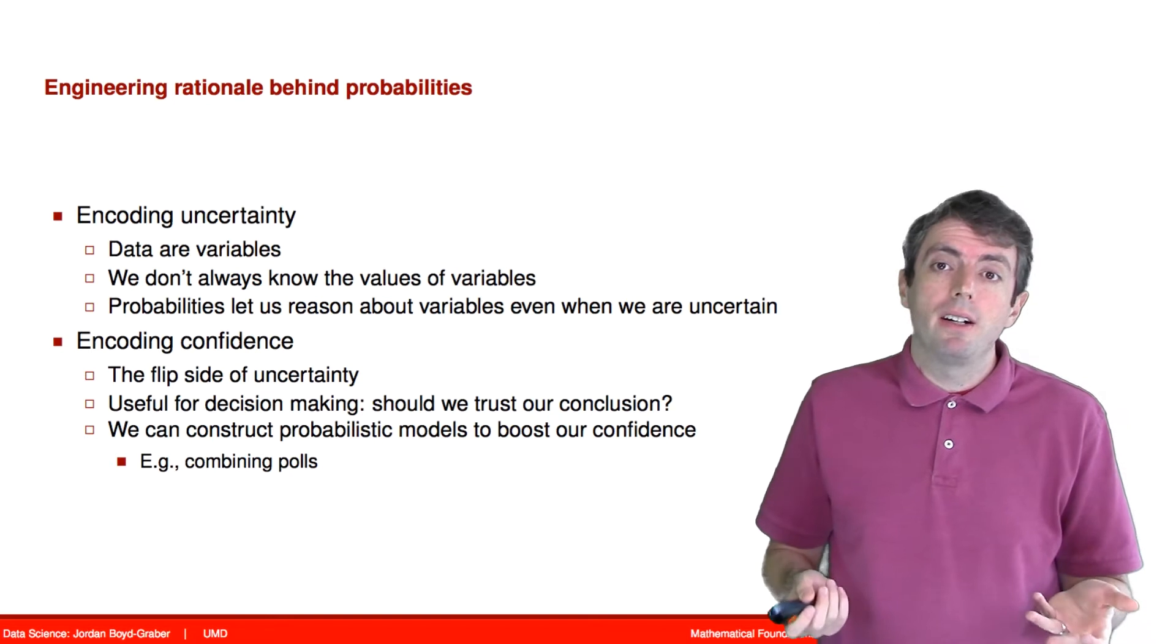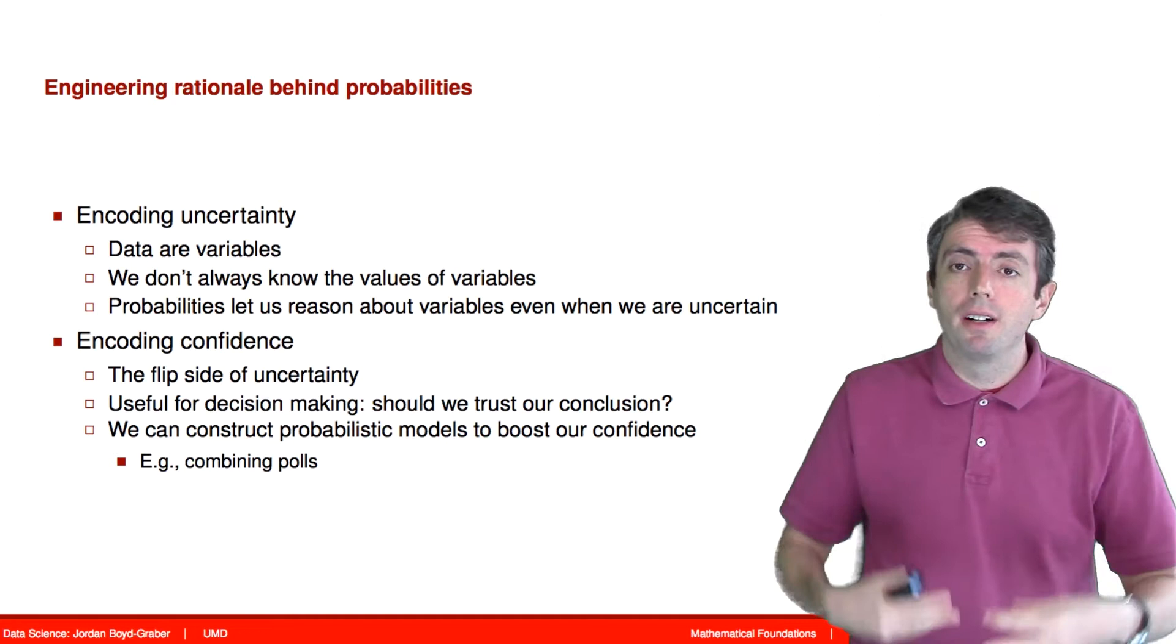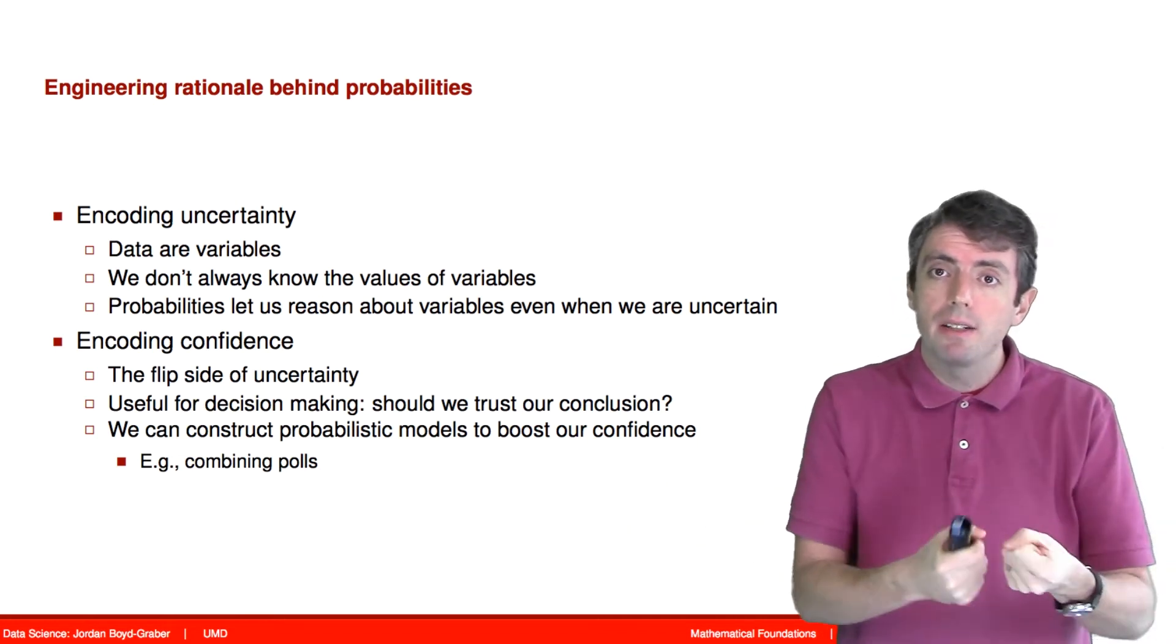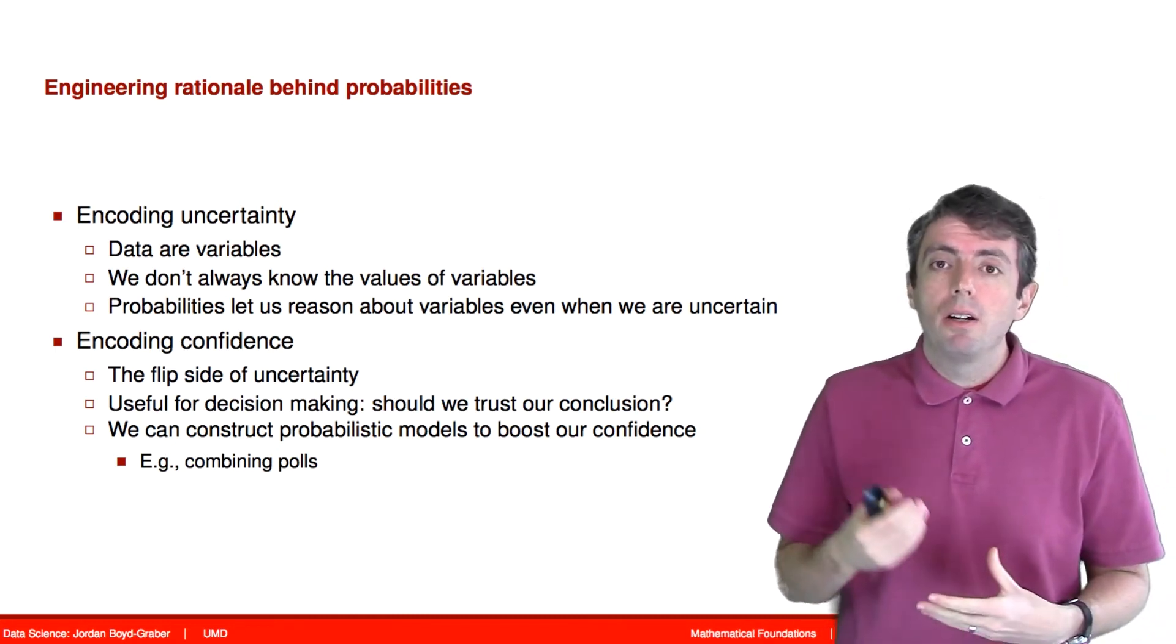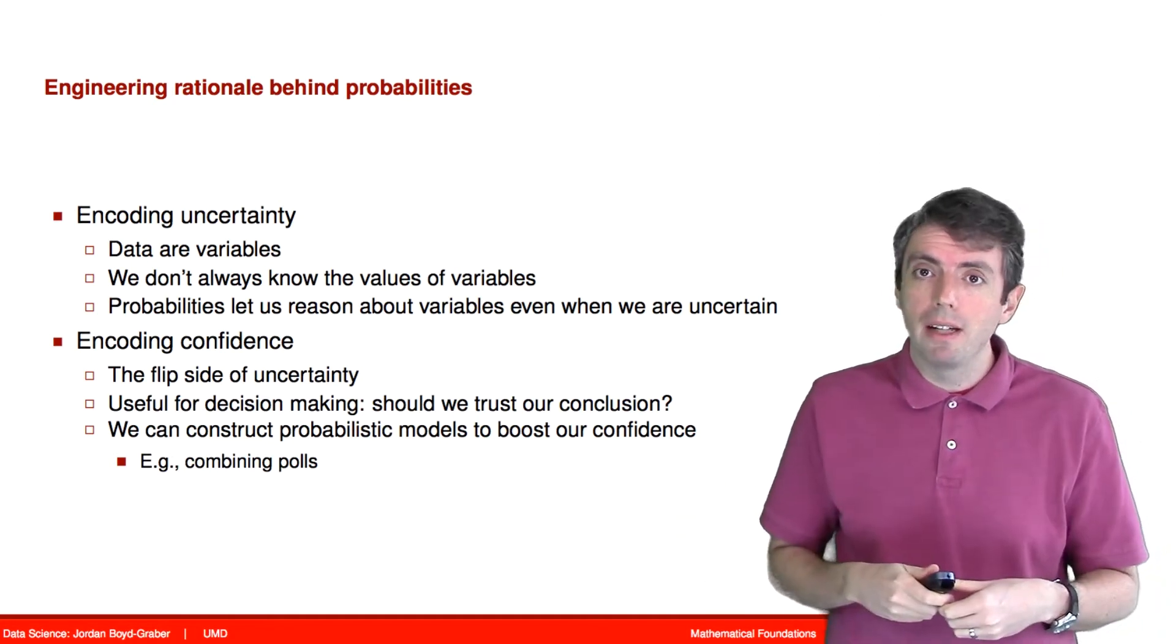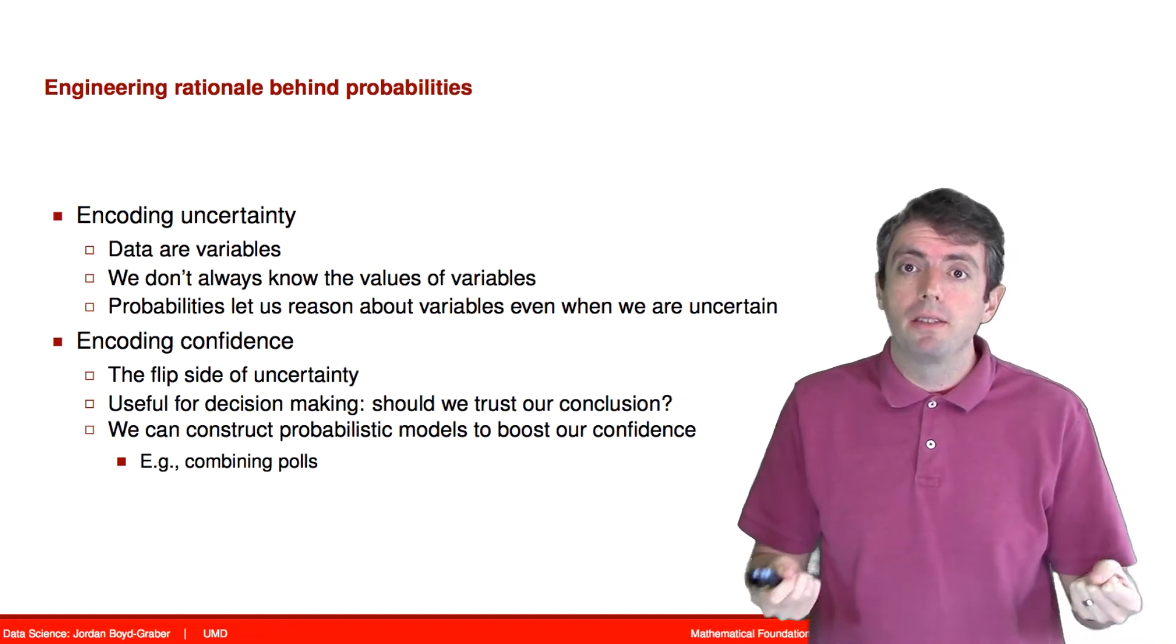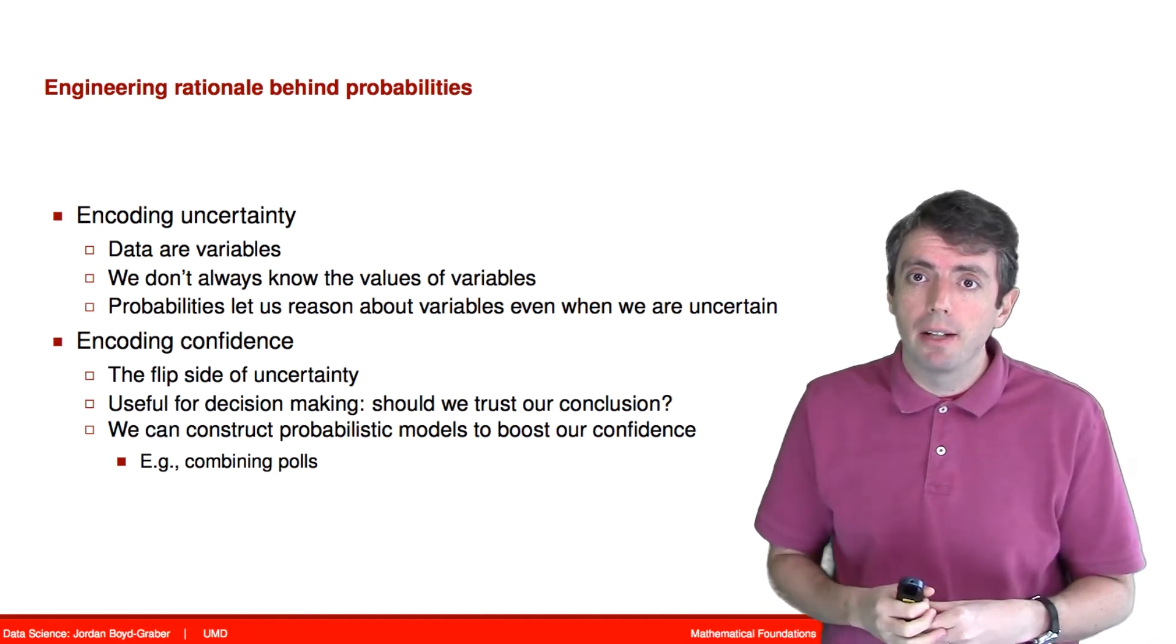So for example, when we are trying to combine polls together, each of those polls are some measurement trying to understand what's going on in the world, they have some intrinsic uncertainty in them. When we combine them together to create a final prediction of what we think is going to happen in the election, or whatever else, we need to use the mathematics of probabilities to combine those together in a reasonable way. So the definitions and the operations that we talk about today will be important for the rest of this class, and understanding what it means to extract knowledge and useful information from the data outside the world, and communicate that using the language of probabilities.